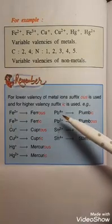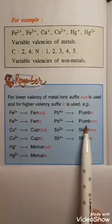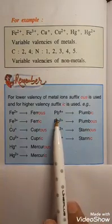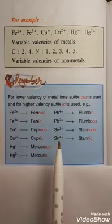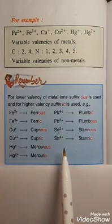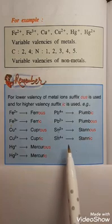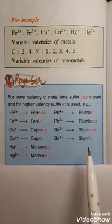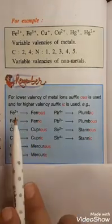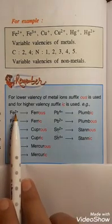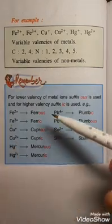Lead shows four valency and two valency: Pb²⁺ is known as plumbous and Pb⁴⁺ is known as plumbic. Tin Sn also shows two valency and four valency: Sn²⁺ with lower valency is termed stannous, and Sn⁴⁺ with higher valency is termed stannic. When stating valency, just give the number — for iron it is valency two or valency three; for copper, valency one or two.